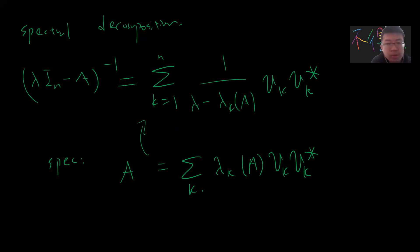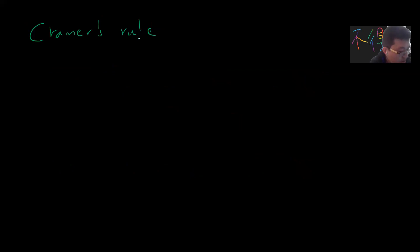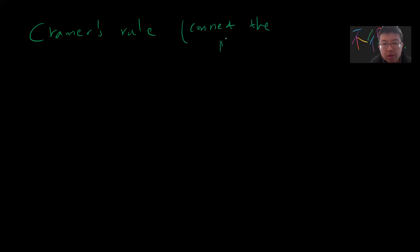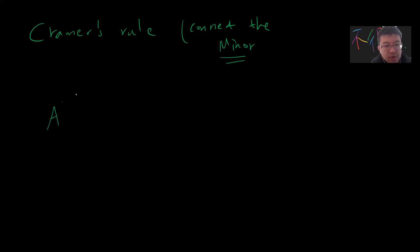Now we use Cramer's rule. Why do we need Cramer's rule? Because we want to connect to the minor. So the simple result is that the inverse is defined to be the adjugate of A divided by the determinant of A.